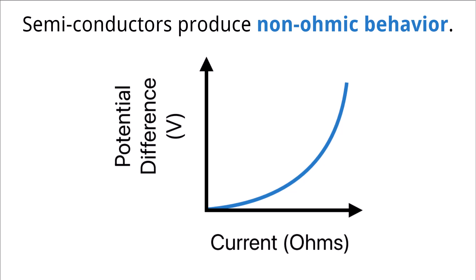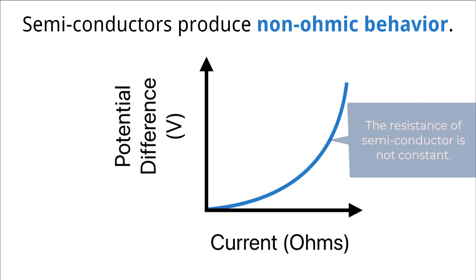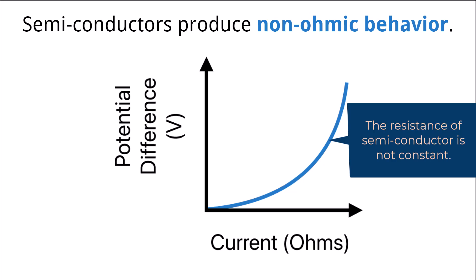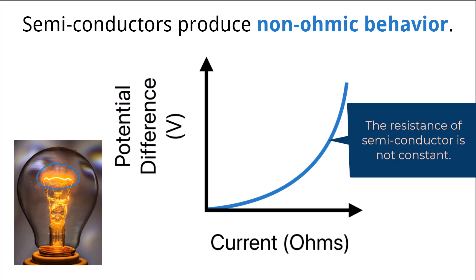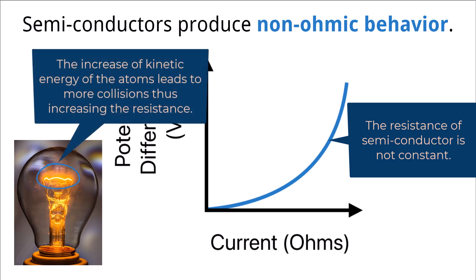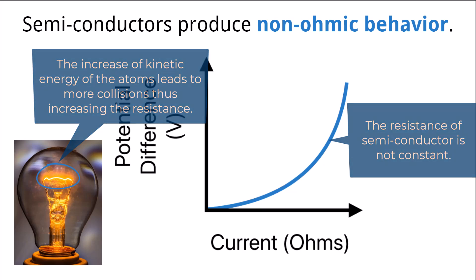Some materials like semiconductors have non-ohmic behavior. This non-ohmic behavior shows that current and potential difference do not have a linear relationship, resulting in the material having variable resistance at different currents. For example, when we consider a filament in a lamp, it produces non-ohmic behavior. As the current is increased, there are more electrons moving, generating a greater transfer of charge through the filament. This increases the kinetic energy of the lattice, causing the atoms to move in the filament and leading to more collisions with electrons, which then transfers more energy. This effect is compounded as the current increases, leading to a non-linear relationship between current and potential difference.